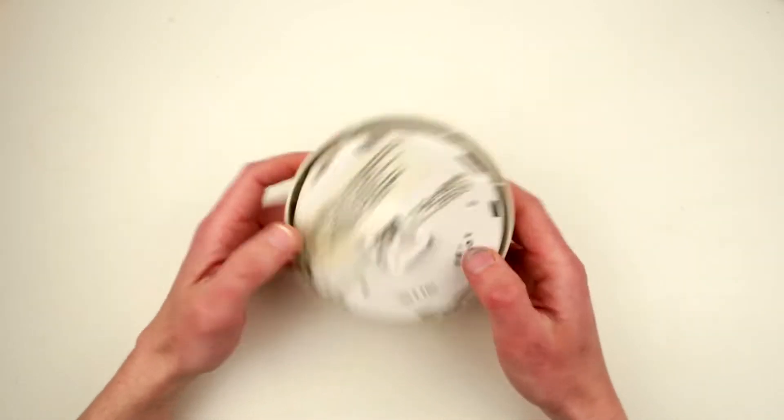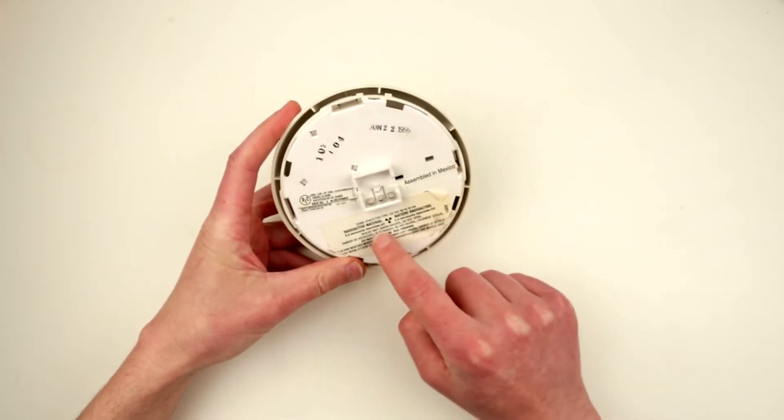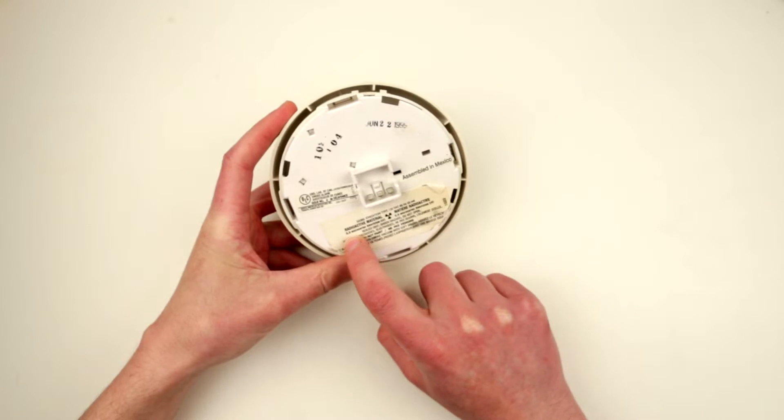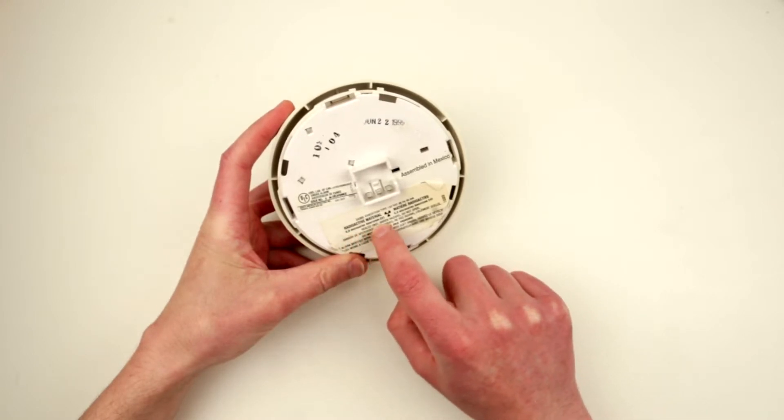So first disclaimer, this guy actually uses americium-241 isotope and 0.9 microcuries of americium-245. So obviously it contains radioactive material because this is old-school.